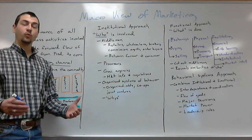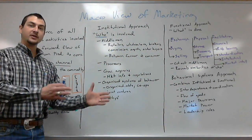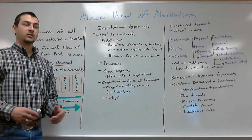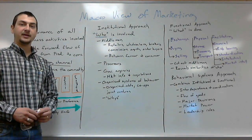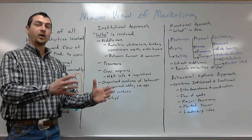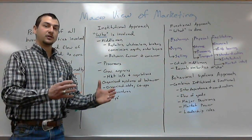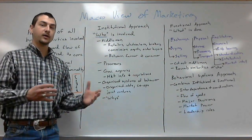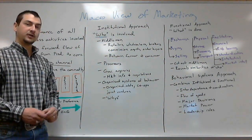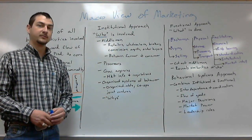That kind of lets us look at the whys of marketing — why is one particular group promoting a particular aspect? It might be a corn producers board, for example, trying to market their product in a certain way. We often look at these organized systems of behavior when examining the whys of marketing.